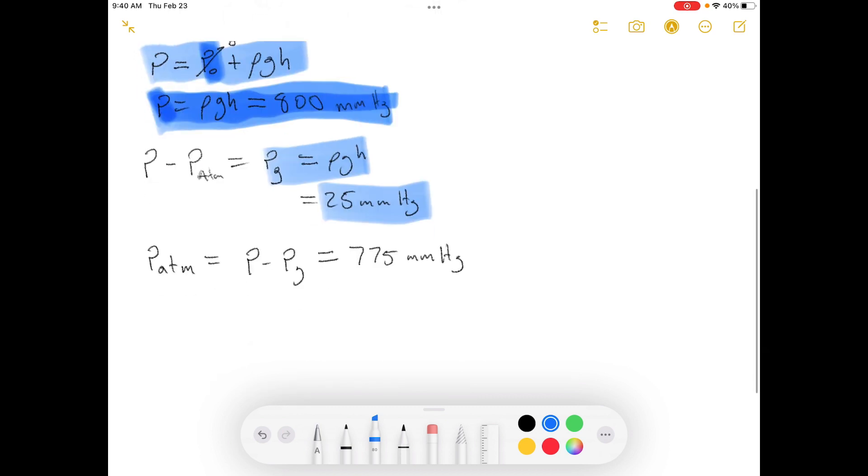And then finally, as we just said, the atmospheric pressure is equal to the pressure minus the gauge pressure, as you can see from this relationship that we just showed. And so we have the total pressure minus the gauge pressure equals 775, which would be 800 minus 25. And that is it for problem number 3.40.